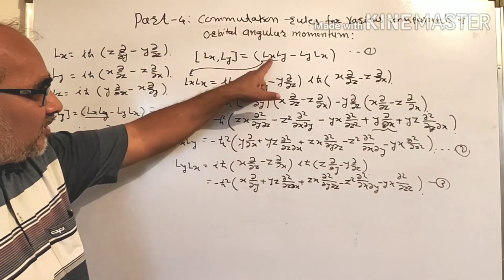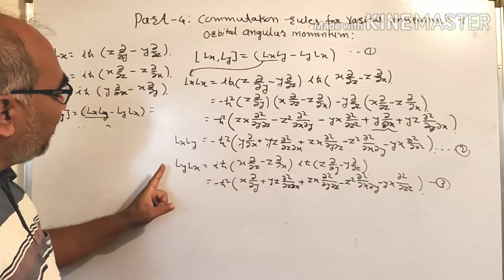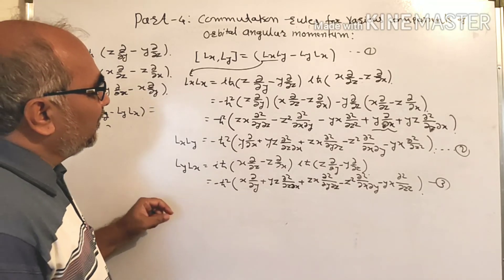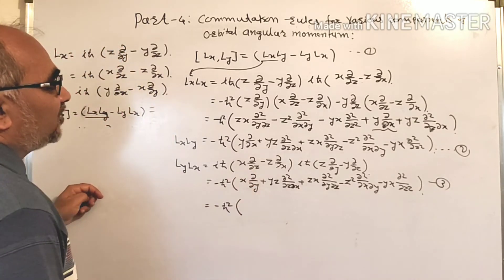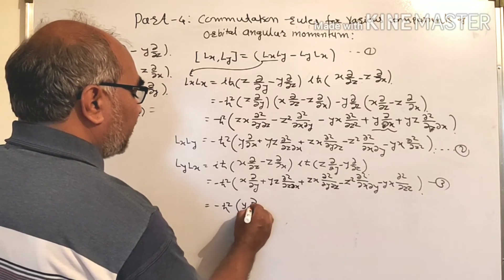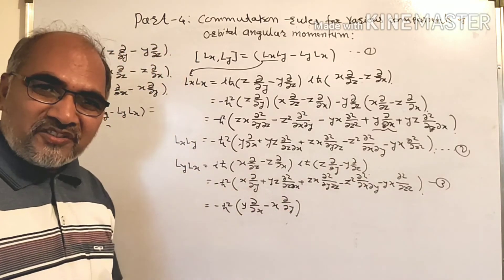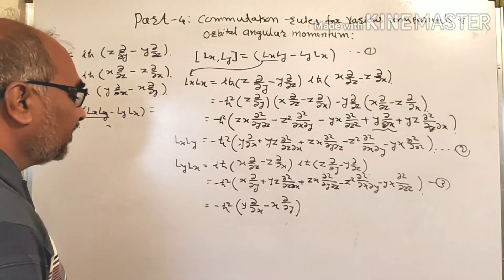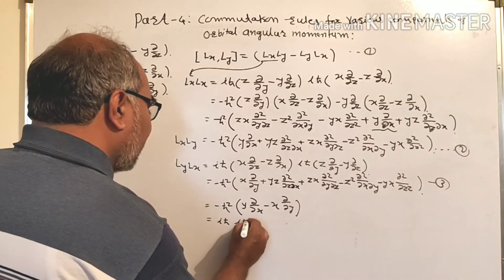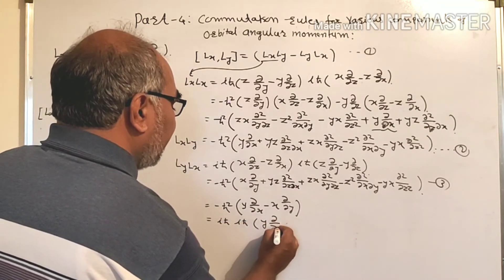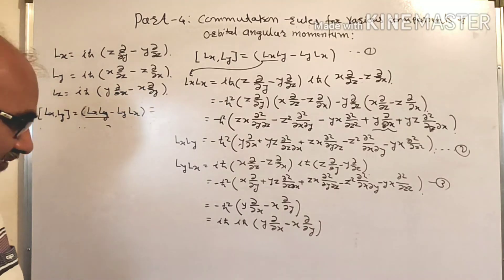Now, substituting into [Lx, Ly] = LxLy − LyLx, the only terms that remain are −ħ² times (y ∂/∂x − x ∂/∂y). All other terms get cancelled with each other. Therefore we can write this as iħ times iħ times (y ∂/∂x − x ∂/∂y).